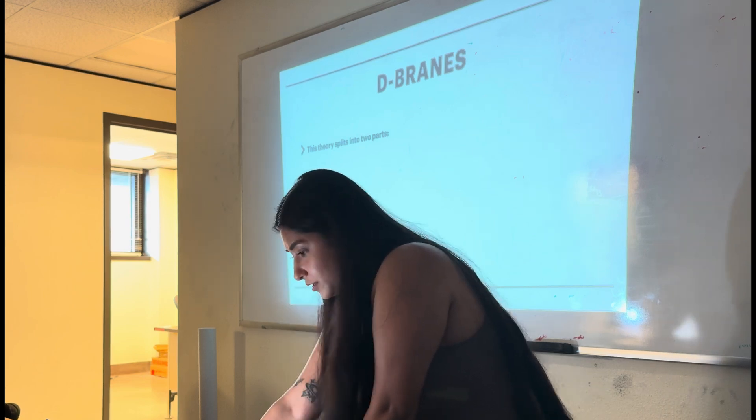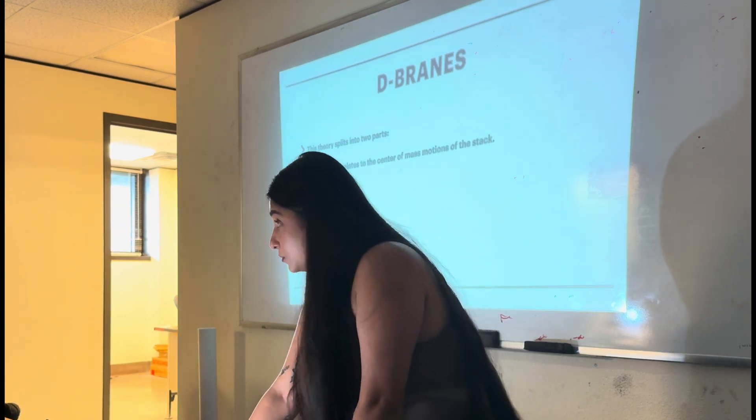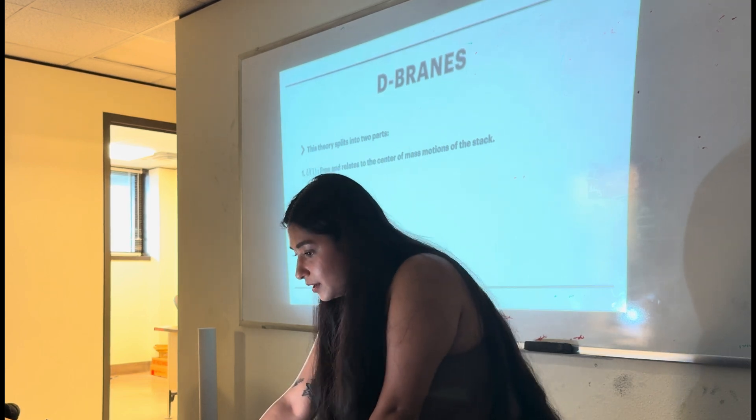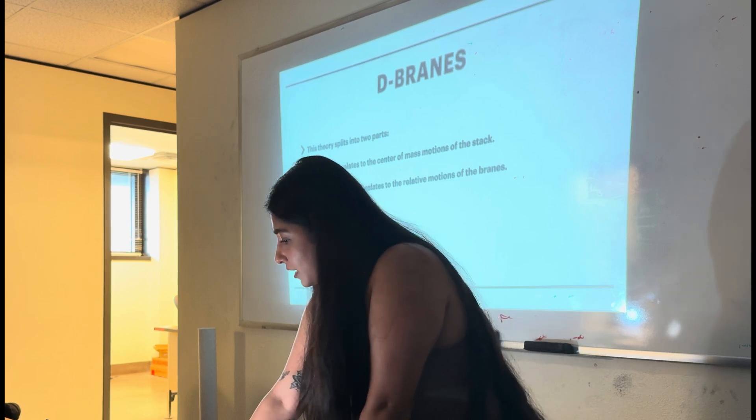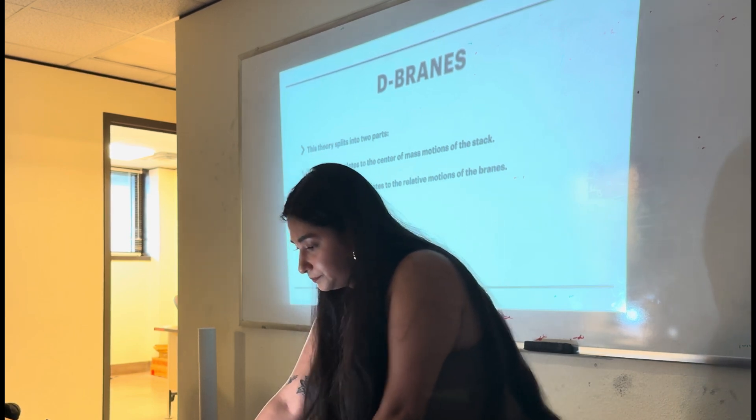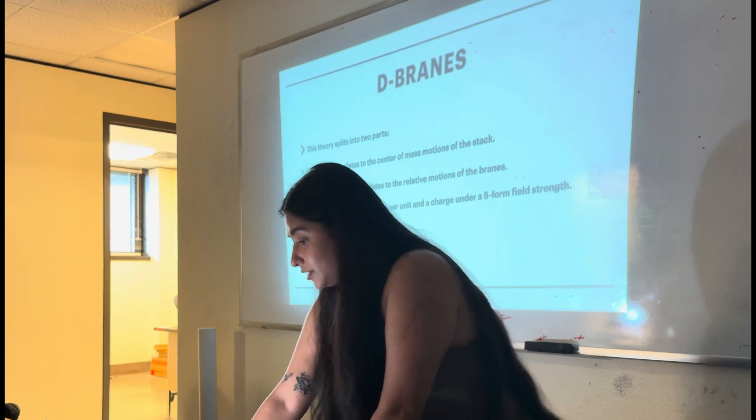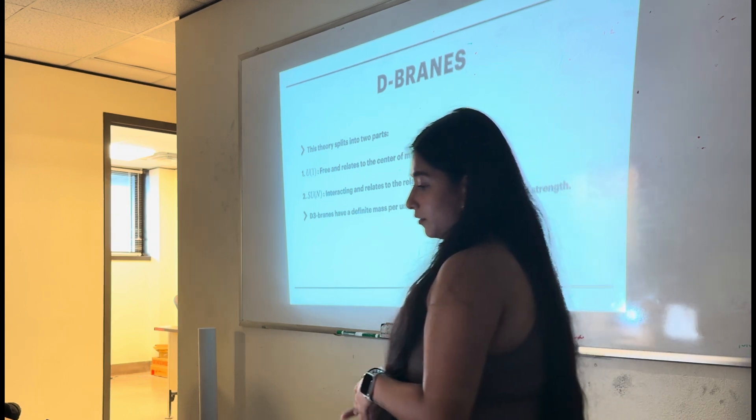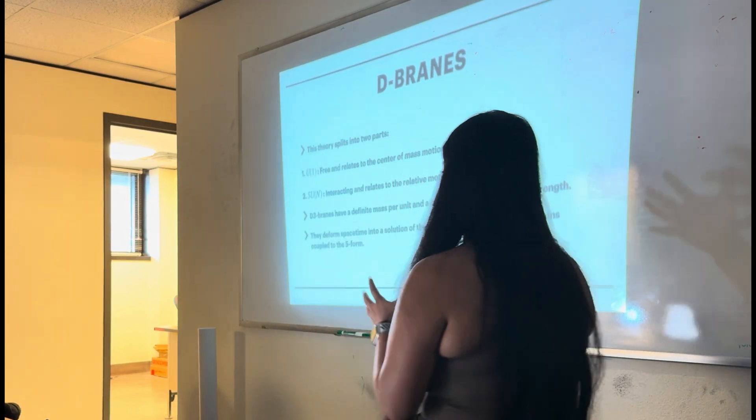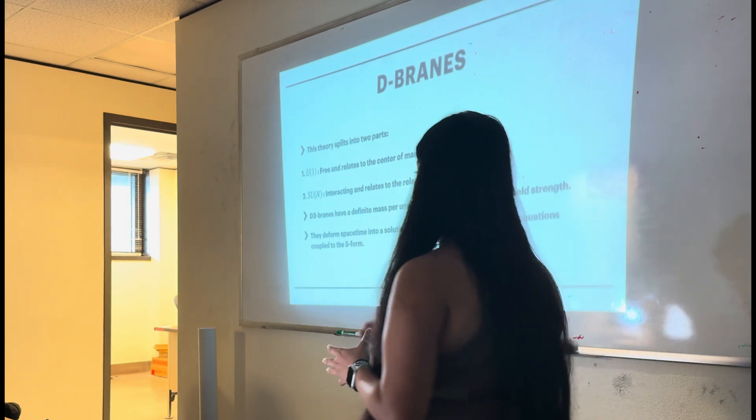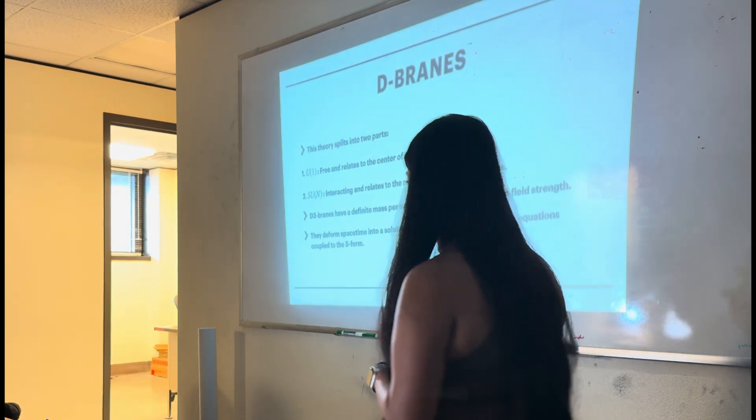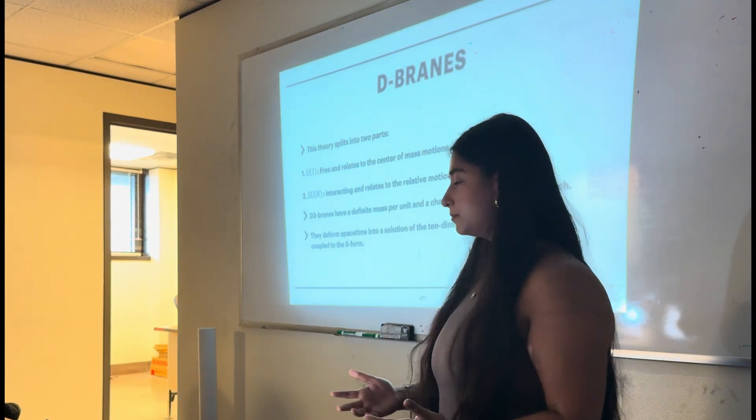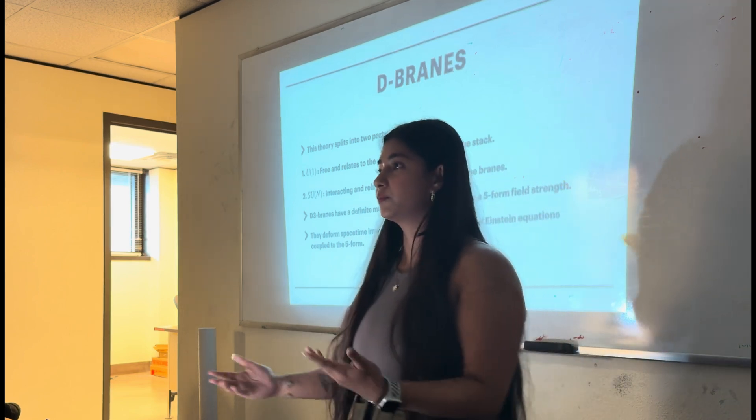Now, if we have N D-branes, N D-3-branes, which are placed on top of one another, one finds that N equals four supersymmetric Yang-Mills theory is now described by U(N) instead of U(1). So the number of D-3-branes decides this N. This theory, the U(N) theory, now splits into two parts. One is the U(1), which is free, and it relates to the center of mass motions of the stack. And the other is SU(N), which is interacting and relates to the relative motions of the branes.